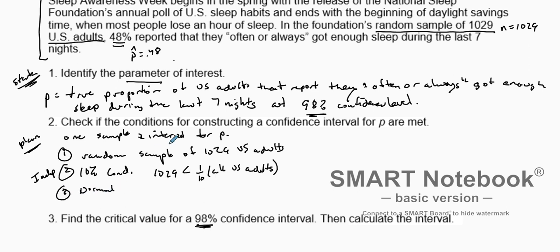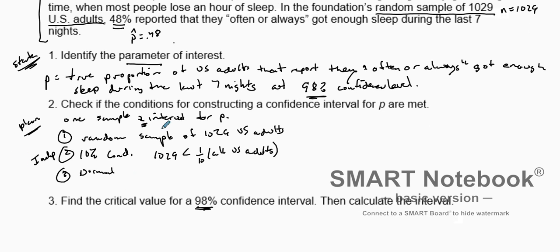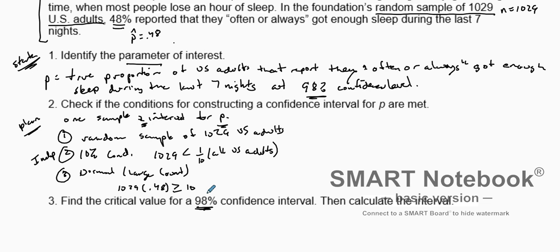Third, we need to check if the sampling distribution is approximately normal, because if it is we can use the Z interval. Since we're talking about proportions, we use the large count condition. We check: is 1029 × 0.48 ≥ 10? Yes. And is 1029 × 0.52 ≥ 10? Yes. Both are true, so the distribution is approximately normal. All conditions have been met for a one-sample Z interval for P.